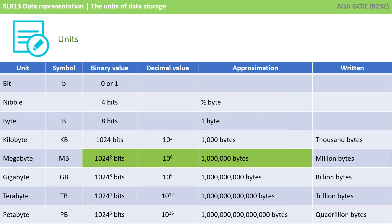So: 1,024 or 1,000 bytes is a kilobyte; 1,024 or 1,000 kilobytes is a megabyte; 1,024 or 1,000 megabytes is a gigabyte; 1,024 or 1,000 gigabytes is a terabyte; and 1,024 or 1,000 terabytes is a petabyte.